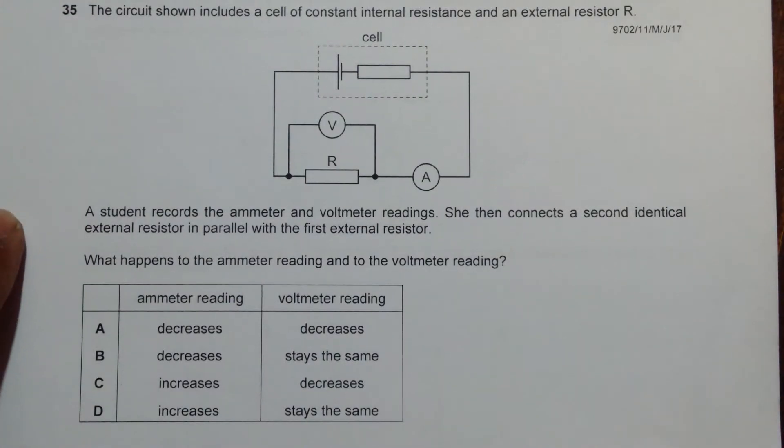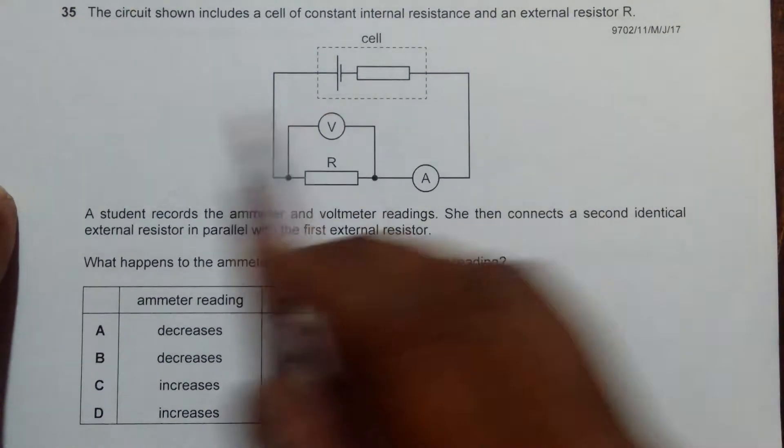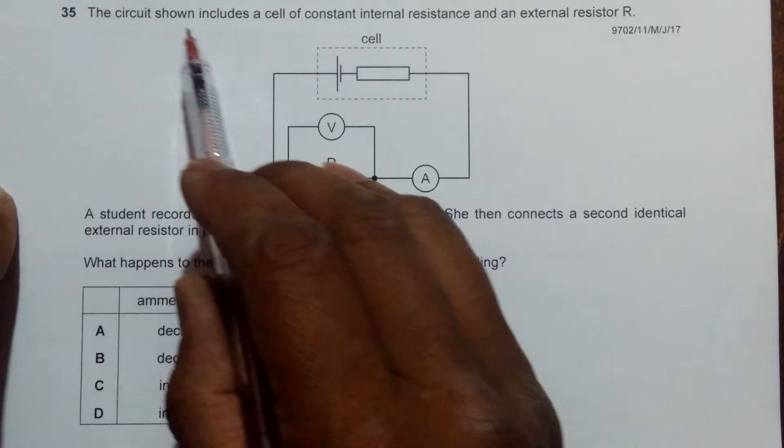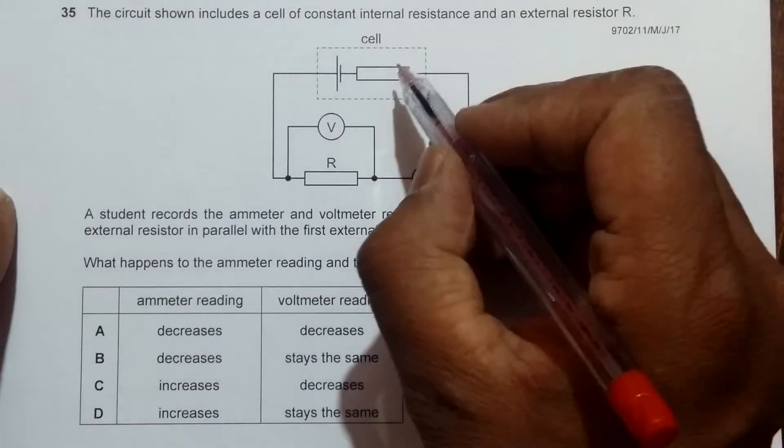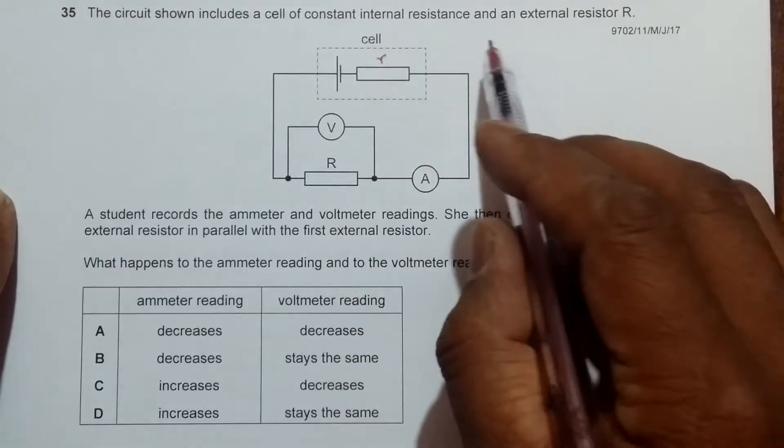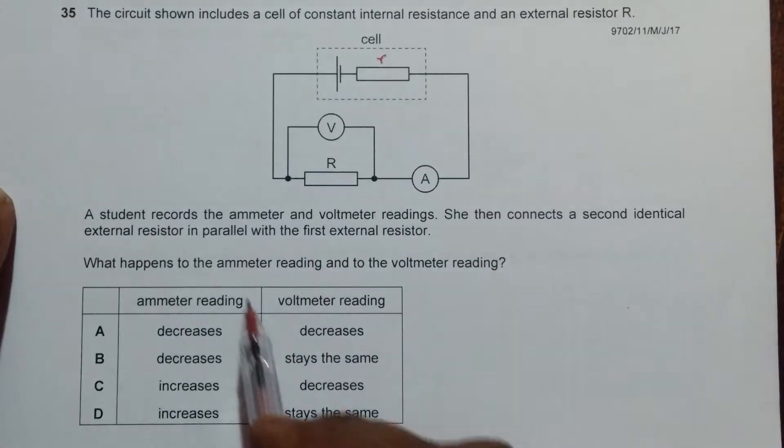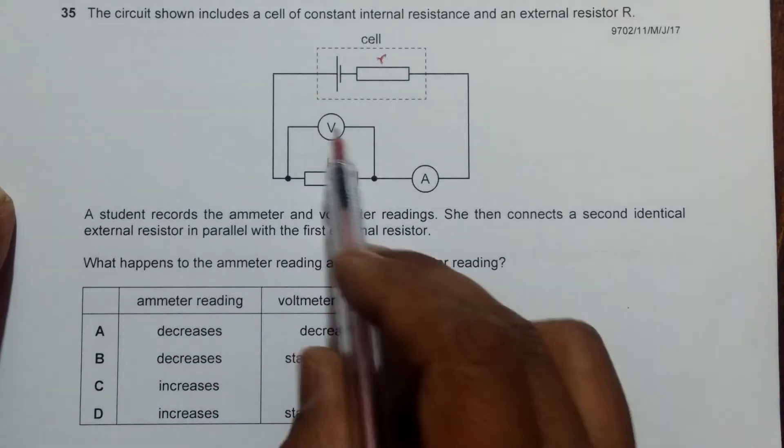This is question 35 from the 2017 May-June Paper 11. The circuit shown includes a cell of constant internal resistance, which I'll name as small r, and an external resistance large R. The student records the ammeter and voltmeter readings as shown by these meters.